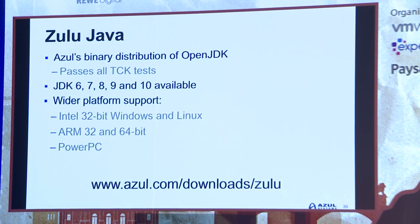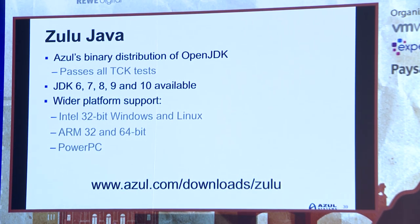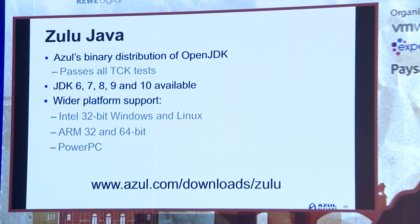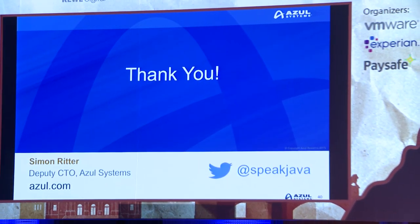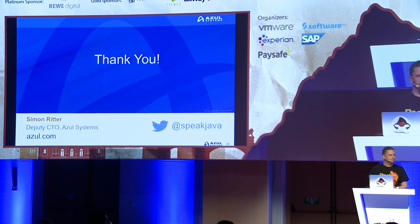One more thing before finishing: Zulu Java, from Azul, takes OpenJDK source code, builds it into a binary distribution, runs the TCK, and guarantees it passes all tests — making it a drop-in replacement. It supports JDK 6, 7, 8, 9, and 10, with wide platform support including 32-bit Windows, 32-bit Linux, ARM 32/64, and 64-bit PowerPC. It's free to download under GPL v2 with Classpath Exception, with commercial support available. Thank you.